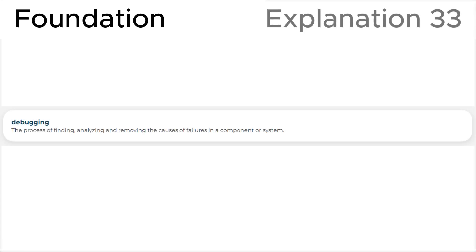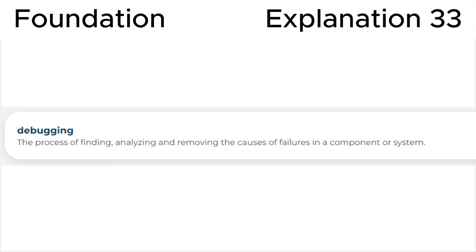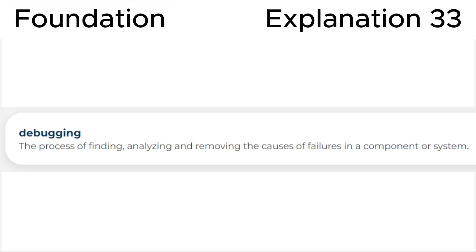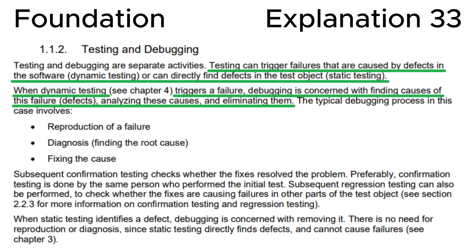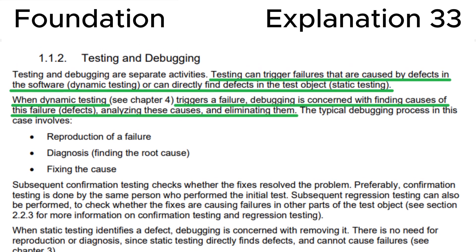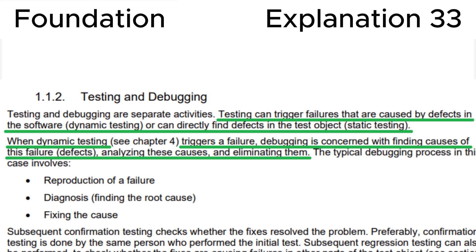In the explanation, let's look at the definition of debugging in the ISTQB glossary. We can see that debugging is finding, analyzing, and removing the causes of failures in a component or system. According to ISTQB syllabus section 1.1.2, testing and debugging: testing can trigger failures that are caused by defects in the software (dynamic testing), or can directly find defects in the test object (static testing). When dynamic testing triggers a failure, debugging is concerned with finding causes of these failures or defects, analyzing these causes, and eliminating them.